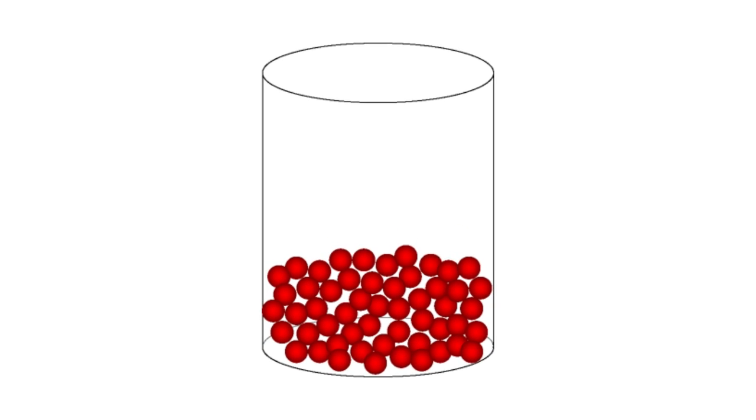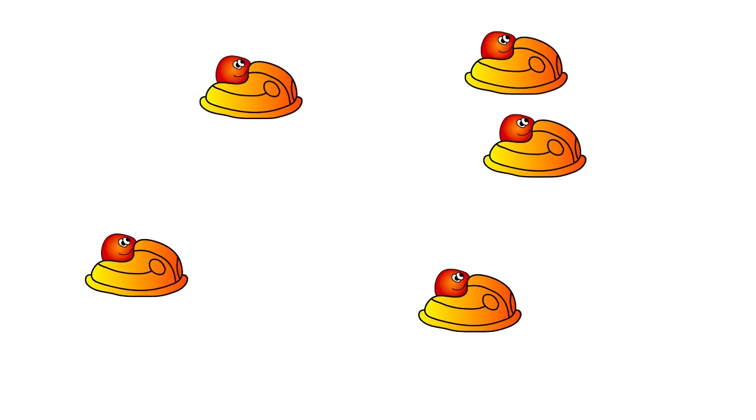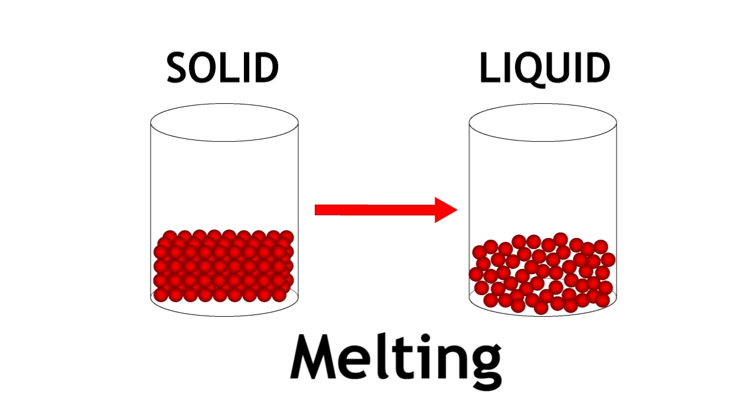With more energy, you can imagine the atoms moving freely around like dodgem cars at the fair. This change is called melting.